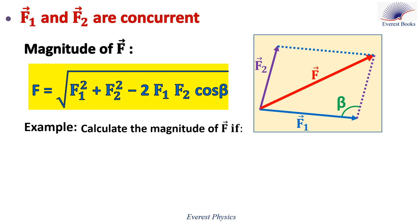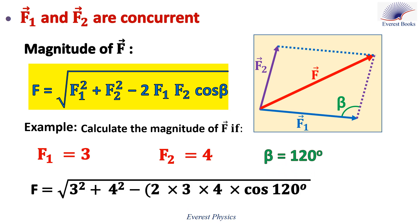Let's solve an example. Calculate the magnitude of the resultant vector F. F1 equals 3 units, F2 equals 4, and beta equals 120 degrees. Replace F1 by 3, F2 by 4, and beta by 120 degrees. Then the magnitude of the resultant vector is 6.1 newtons.